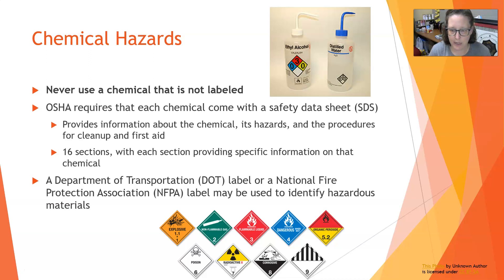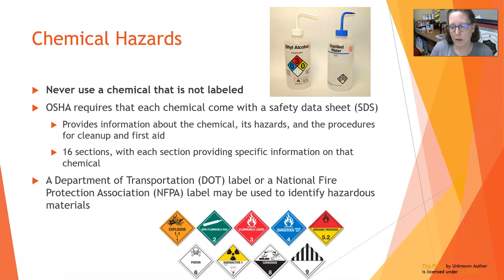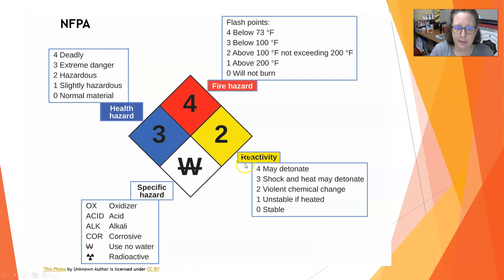The DOT labels are the ones you see on trucks and train cars when driving on the road — to warn anyone nearby whether the contents are flammable, radioactive, explosive, or otherwise dangerous. The NFPA labels look like a diamond divided into four colored sections: blue for health hazard, red for fire, yellow for reactivity, and white for specific hazards.